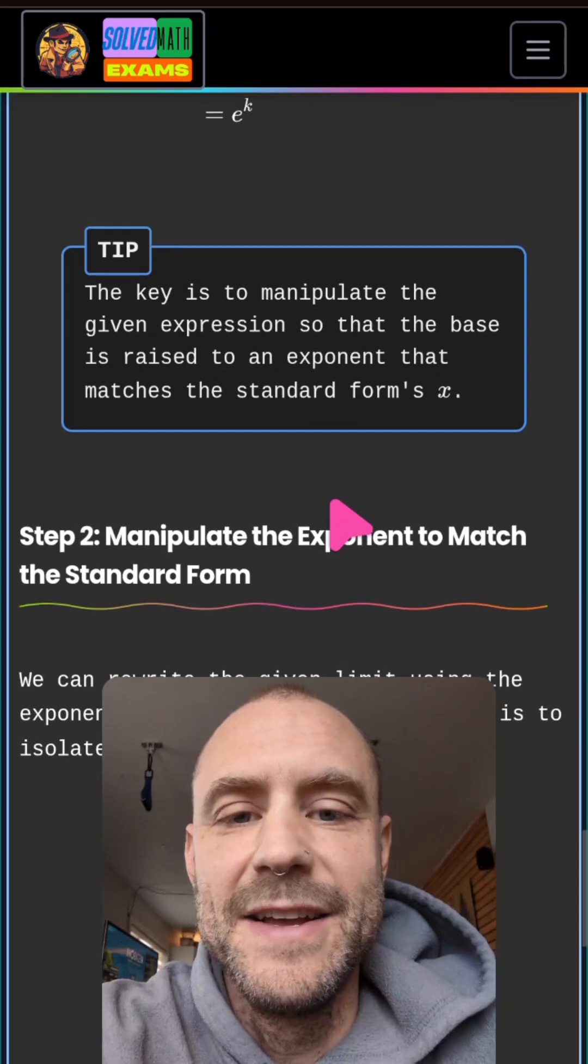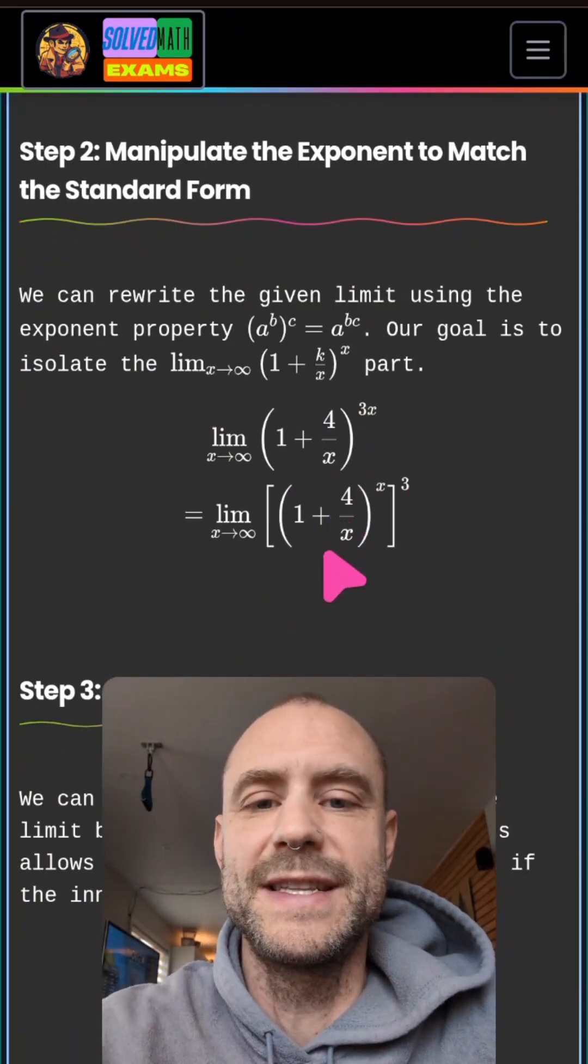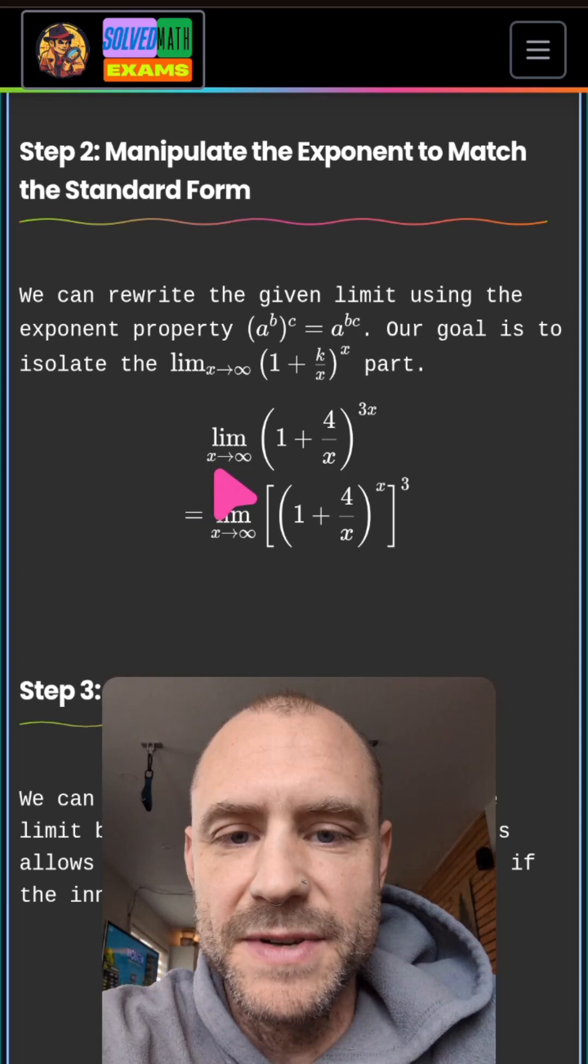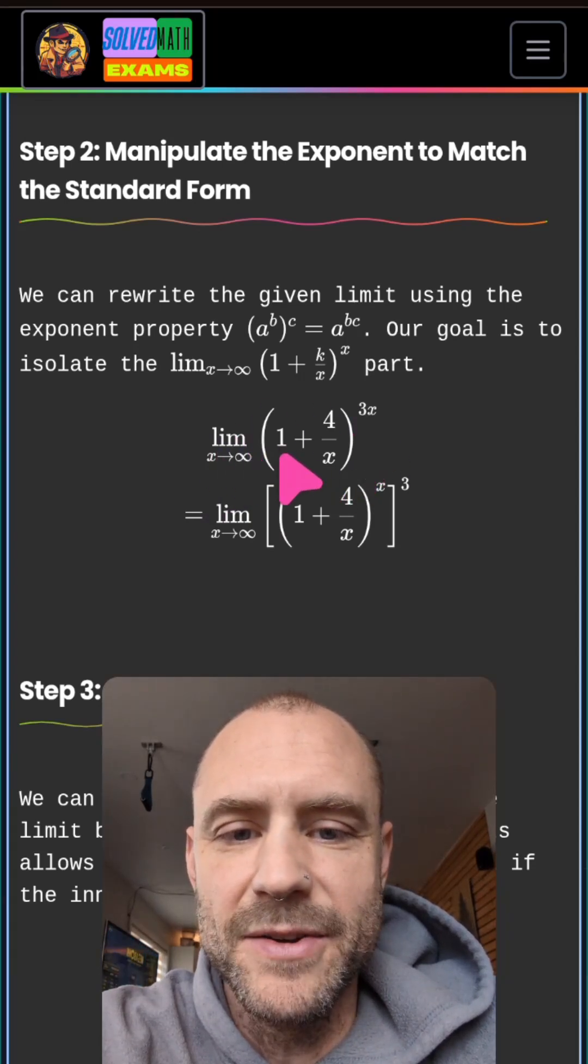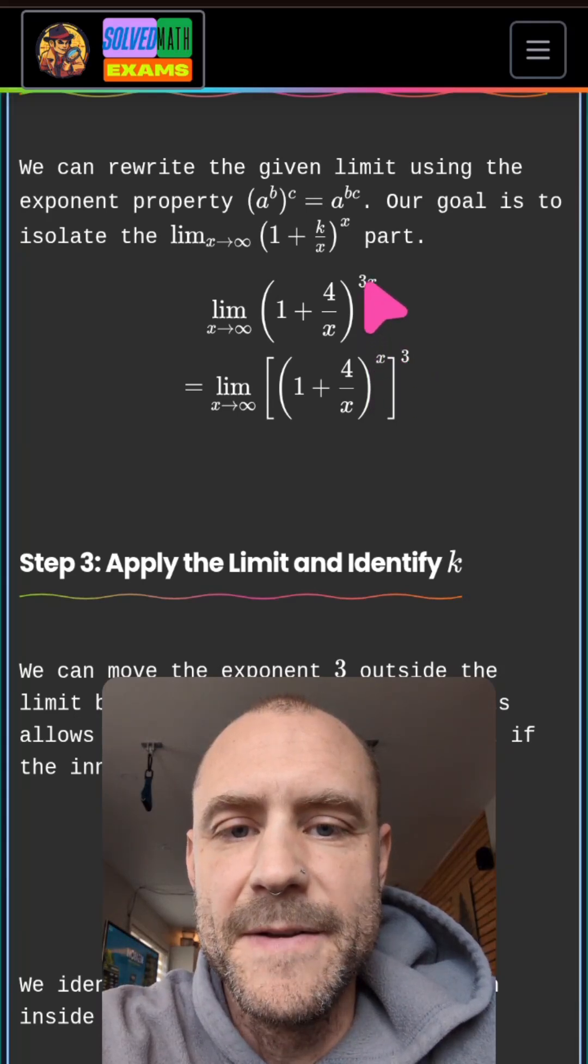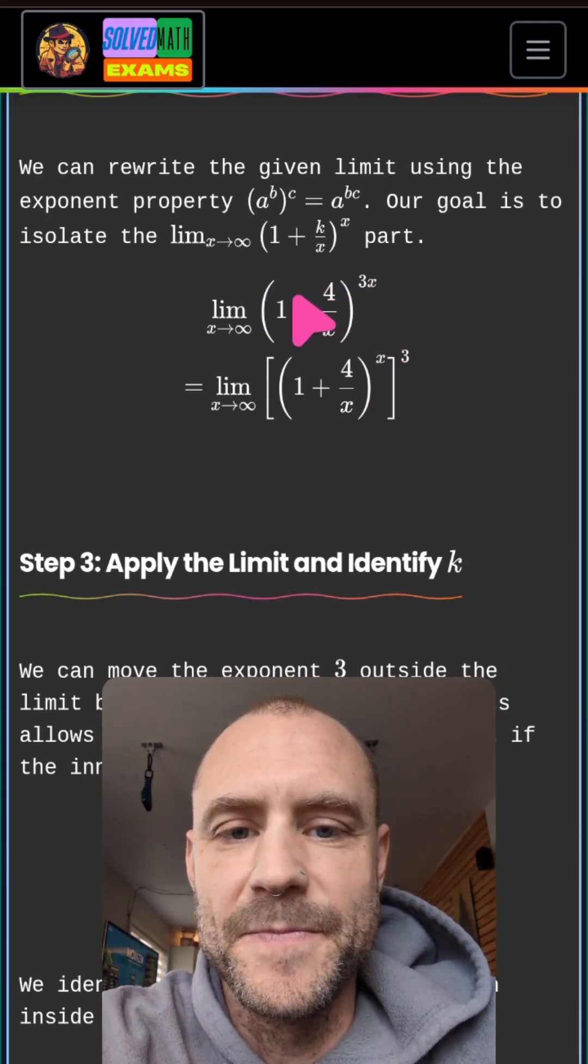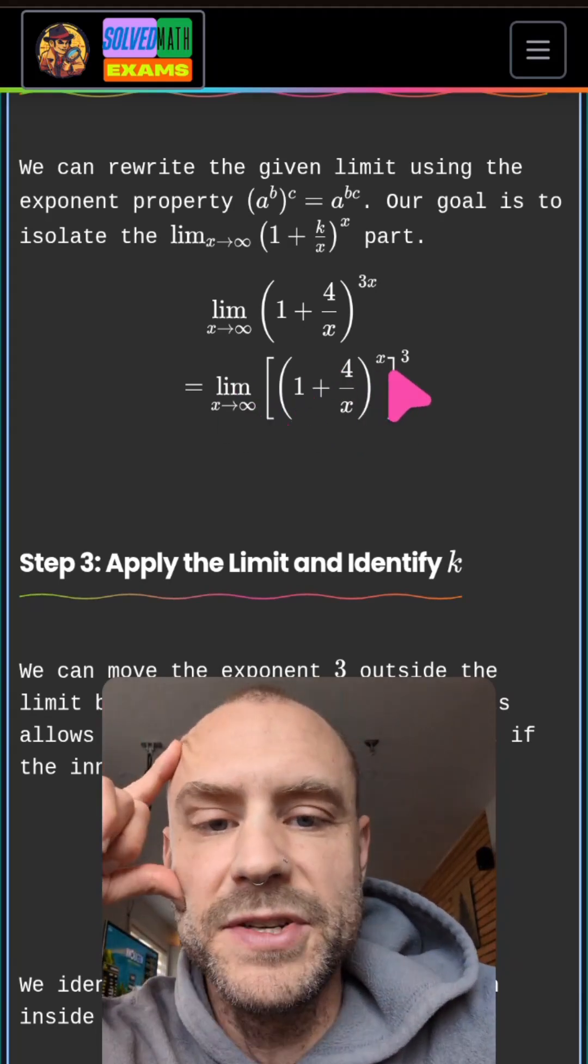Back to this. We have to manipulate our question so that we can expose this definition. The original question is not quite in the form that we need. But what we can do is factor out the 3 from this exponent. And when we do that, we reveal something that's much closer.